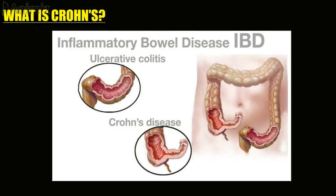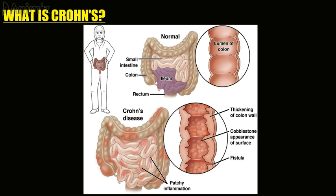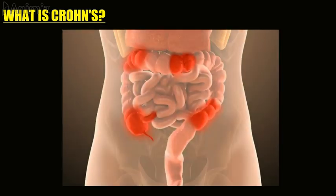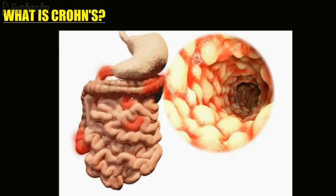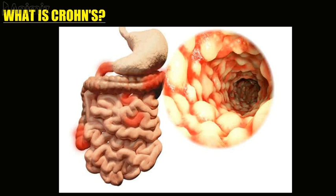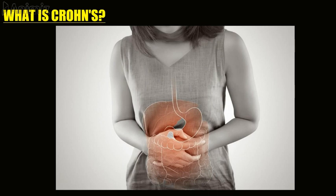The disease belongs to a group of conditions called inflammatory bowel diseases. Crohn's disease most commonly affects the end of the small intestine and the beginning of the large intestine, but inflammation can occur anywhere in the digestive tract. There is no cure for Crohn's disease, but there are many treatments to help manage its symptoms. Most people with Crohn's disease go through periods of remission in which they have no symptoms, and flare-ups during which symptoms worsen.